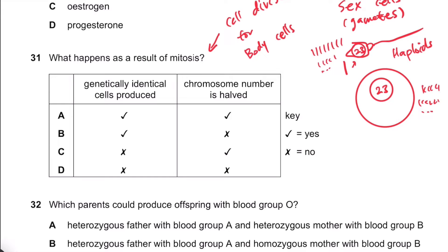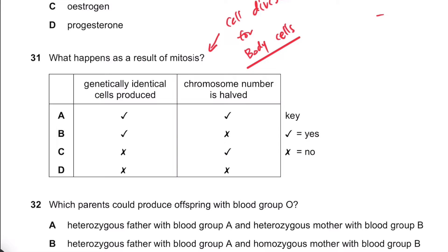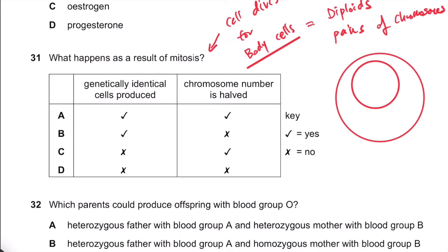But for body cells, these don't have single sets — they have pairs of chromosomes. Therefore, they are called diploids because they have pairs of chromosomes. So for humans, each body cell has 46 chromosomes, arranged in pairs like this.